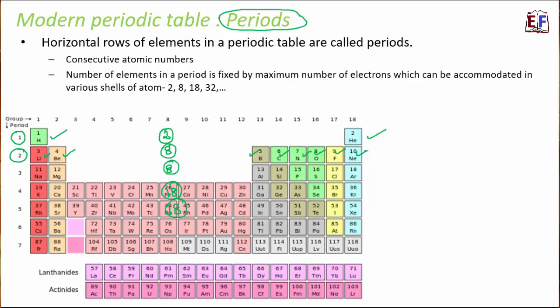The number of elements in a period is fixed by the maximum number of electrons which can be accommodated in the various shells of an atom. In an atom, electrons revolve around the nucleus in shells named K, L, M, N, and so on. Each shell has a fixed number of electrons, determined by the formula 2n².